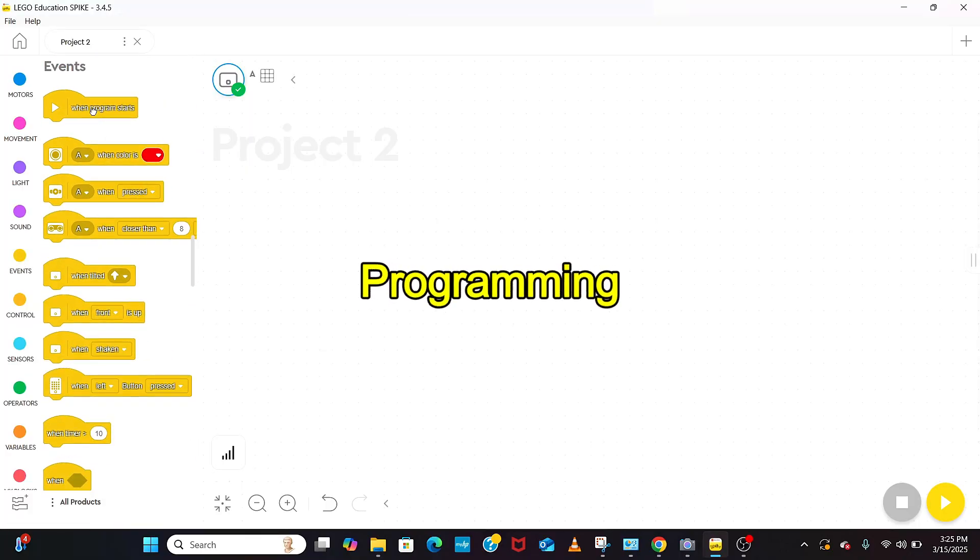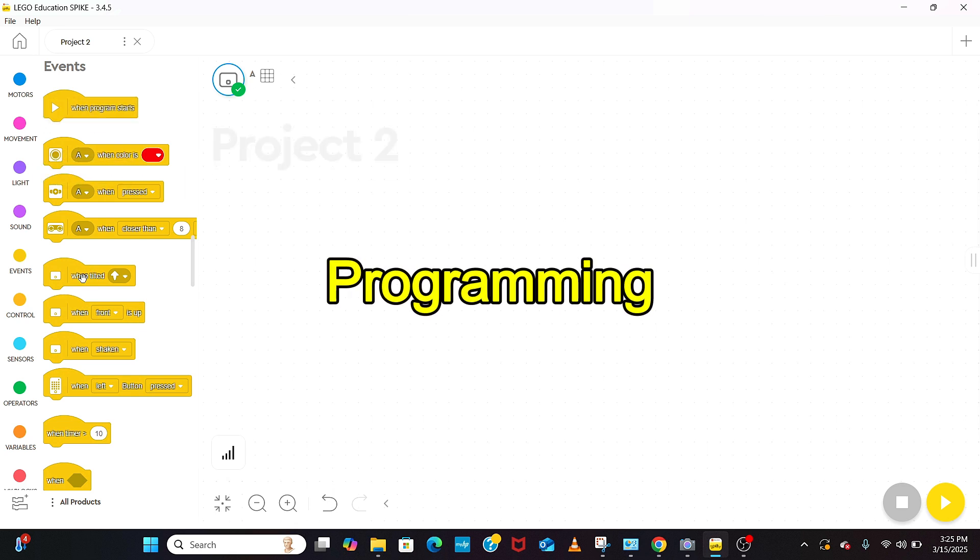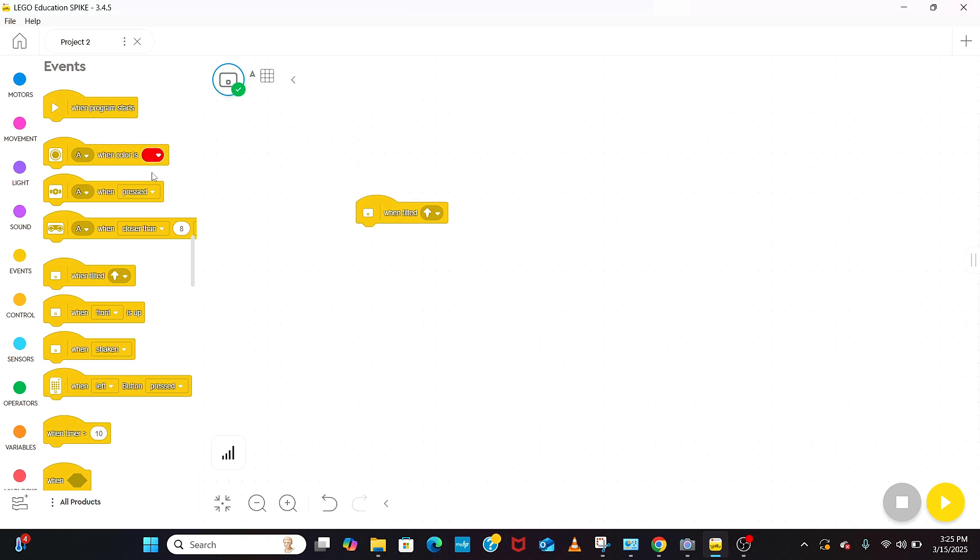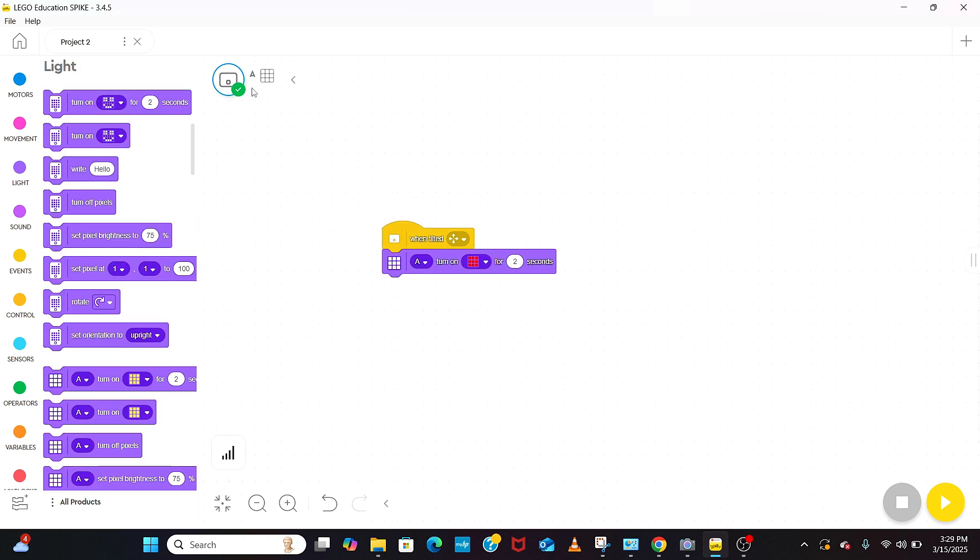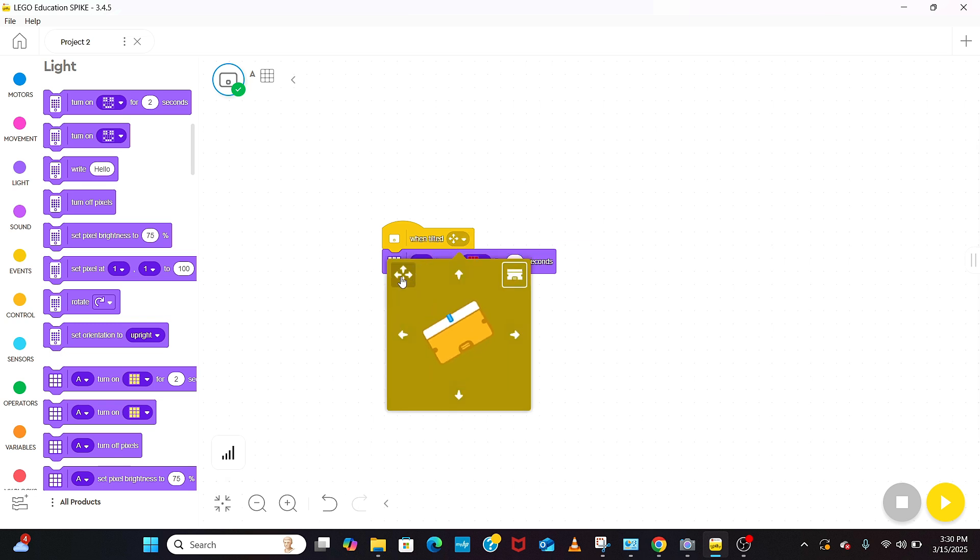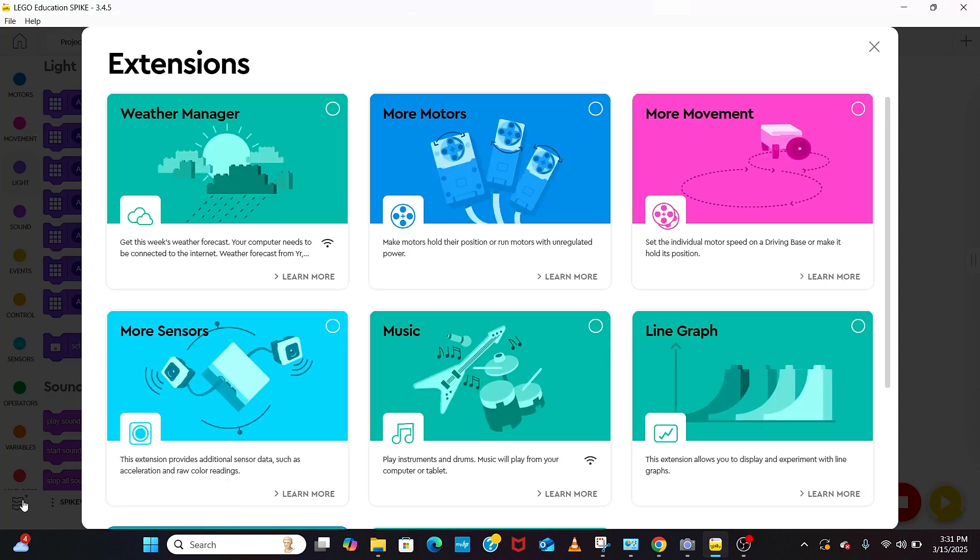Once the amazing is constructed, the next step is to program this using the hub. Let's create a simple program. We start with creating the name of the program and connecting the hub to the computer. In this program we start with the event function that triggers the program when the tilt sensor detects any tilt. When this happens we turn on the light to red for two seconds.